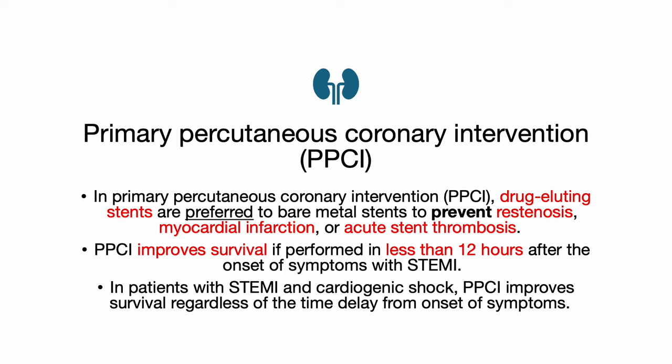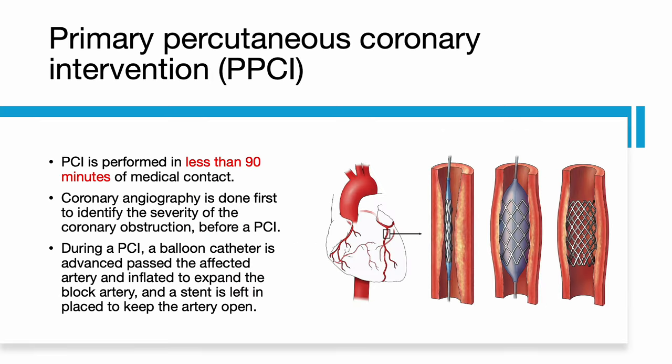In primary percutaneous coronary intervention, drug-eluting stents are preferred to bare metal stents to prevent restenosis, myocardial infarction, or acute stent thrombosis. Primary PCI improves survival if performed in less than 12 hours after the onset of symptoms with ST elevation MI. In patients with ST elevation MI with cardiogenic shock, primary PCI improves survival regardless of time delay from onset of symptoms, even if symptoms occurred more than 12 hours. PCI is performed within 90 minutes of medical contact. Coronary angiography is done first to identify the severity of coronary obstruction, and during PCI, a balloon catheter is advanced past the affected artery and inflated to expand the blocked artery, with a stent left in place to keep the artery open.